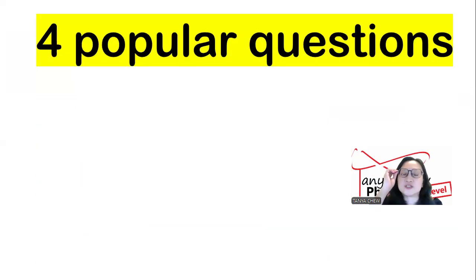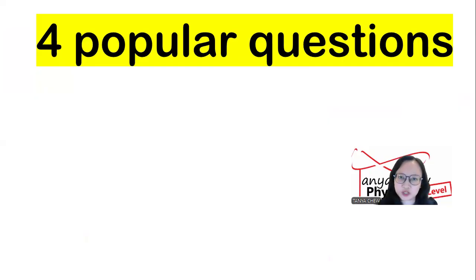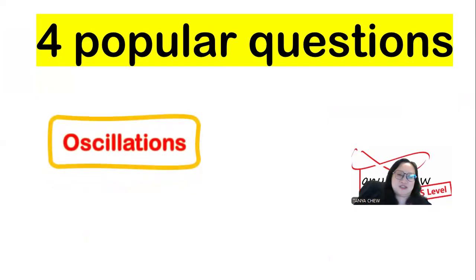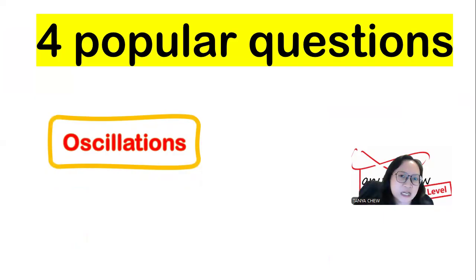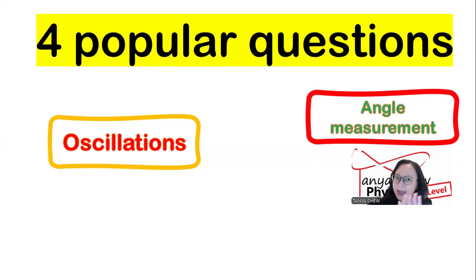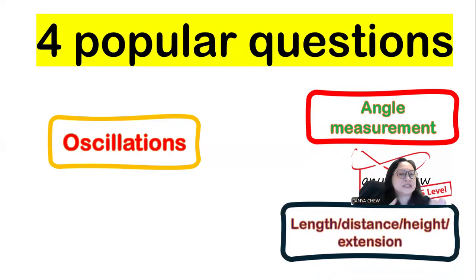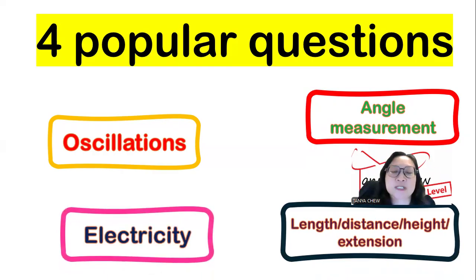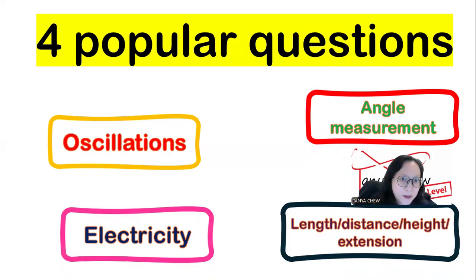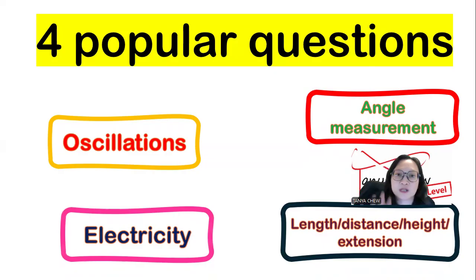The four popular questions that always pop up in your Physics Practical Paper 3, question number 1 are: oscillations — either the oscillation of a simple pendulum bulb, oscillation of modelling clay, oscillation of a ruler, etc. — or angle measurement, where you just need to measure angle. And length, distance, height or extension measurement. The last one, which is the most hated, is electricity. Let us analyze these four questions one by one and the things you should avoid to prevent careless mistakes.